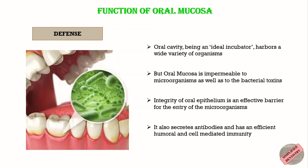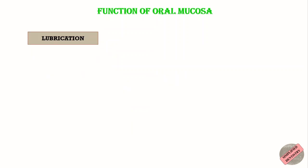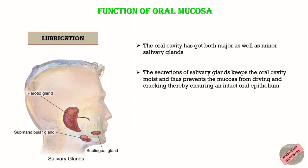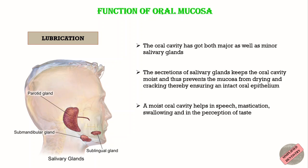The oral epithelium functions as a physical and immune barrier to external aggressions and prevents the penetration of the oral cavity's normal bacterial flora that may cause infection. The second important function is lubrication. The oral cavity has both major and minor salivary glands. The minor salivary glands are present throughout the oral mucous membrane, and the secretion of salivary glands keeps the oral cavity moist, preventing the mucosa from drying and cracking. A moist oral cavity helps in speech, mastication, swallowing, and also in the perception of taste.